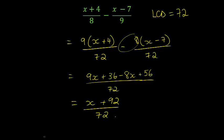Now when I get to this stage, I need to make sure that I can't simplify any further by looking for common factors. So x, 92, and 72 don't have any common factors, so I'm finished. I can stop there.